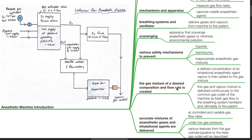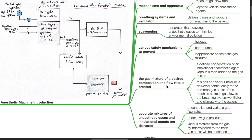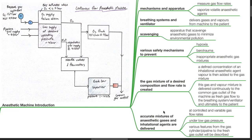The gas mixture of a desired composition and flow rate is created. A defined concentration of an inhalational anaesthetic agent vapor is then added to the gas mixture. This gas and vapor mixture is delivered continuously to the common gas outlet of the machine as fresh gas flow to the breathing system or ventilator and ultimately to the patient. Accurate mixtures of anaesthetic gases and inhalational agents are delivered at controlled and variable flow rates under low gas pressure. Various features from the gas cylinder or pipeline to the fresh gas outlet will be described.